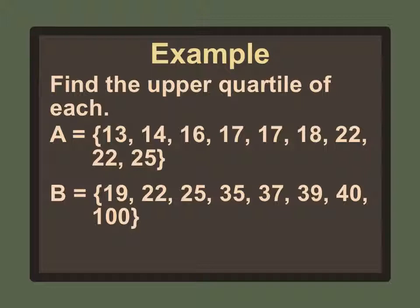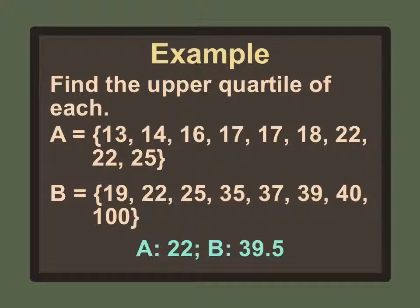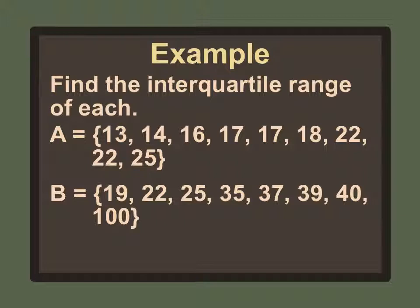For the upper quartile of A — since it's odd, we exclude 17 and look at 18, 22, 22, and 25. The middle numbers are 22 and 22, so the upper quartile is 22. For B, the upper half is between 37 and 100. The middle numbers are 39 and 40, giving an upper quartile of 39.5. The interquartile range for A is 22 minus 15 equals 7, and for B is 39.5 minus 23.5 equals 16.